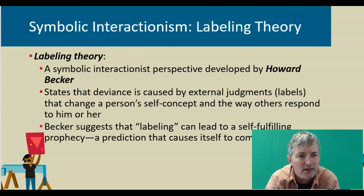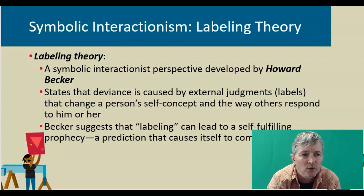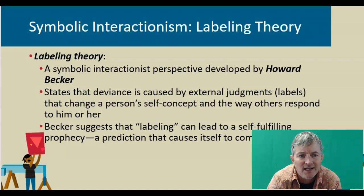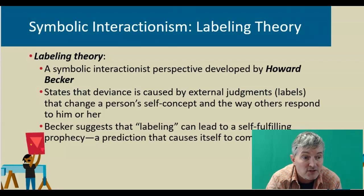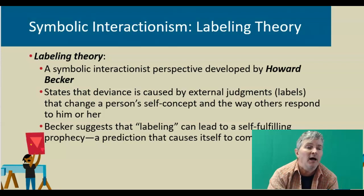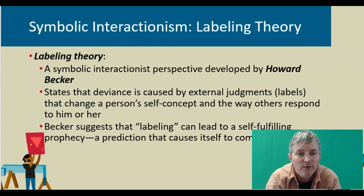Labeling theory is a symbolic interactionist perspective developed by Howard Becker. Becker states that deviance is caused by external judgments or labels that change a person's self-concept and the way others respond to them. Becker suggests that labeling can lead to a self-fulfilling prophecy — a prediction that causes itself to come true. He asserted that when people are labeled, the label becomes part of their self-image. If someone tells you that you are smart, you might start perceiving yourself as smart. Likewise, if someone tells you you are bad or stupid, you might start to act that way. One of the problems is that labeling a person can lead to the person acting out their label, especially if that label is anchored or confirmed among many agents of socialization.